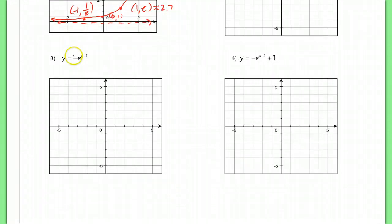Now in number 3, we have two transformations occurring. We have a reflection, a flip over the x-axis here. And we are also moving 1 to the right. So the first thing you want to do is make sure you flip it over the x-axis. So instead of looking like this, now it's going to look like that. Which means that our coordinates, which were at 0, 1, it's now at 0, negative 1. Our point that was at 1, e is now at 1, negative e. So about here. And our point that was at negative 1, 1 over e, is now at negative 1, negative 1 over e. So about here.